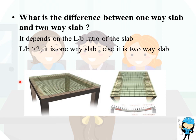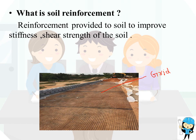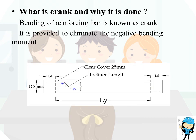The two-way slab is supported on all four sides. The next question is: what is soil reinforcement? Reinforcement provided to soil to improve stiffness and shear strength of the soil is called soil reinforcement. It can be in the form of grid, anchors, or sheet plates. In this picture, the grid shape is shown.